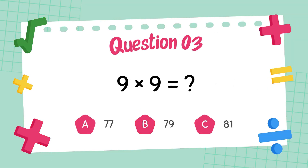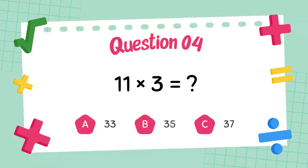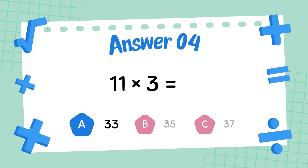What is 9 times 9? The answer is 81. What is 11 times 3? The answer is 33.